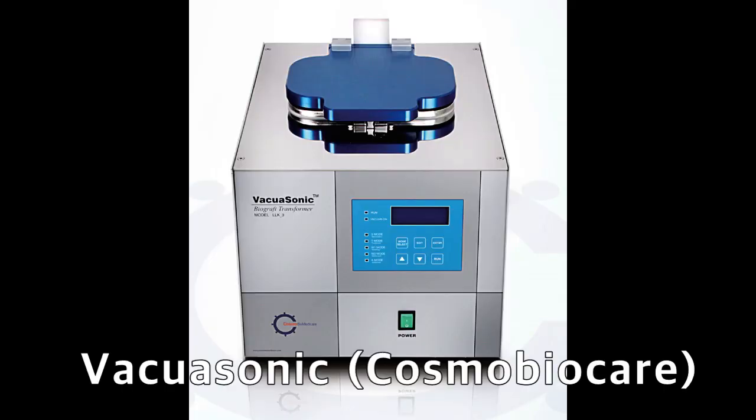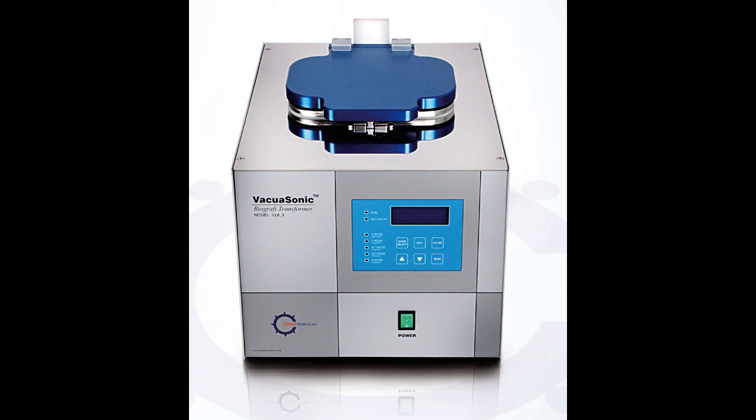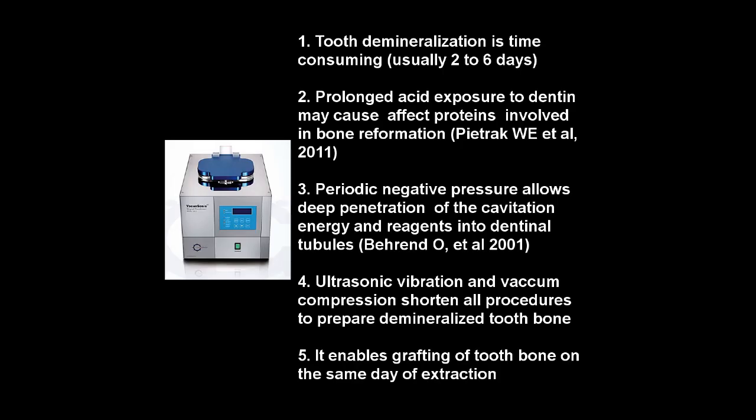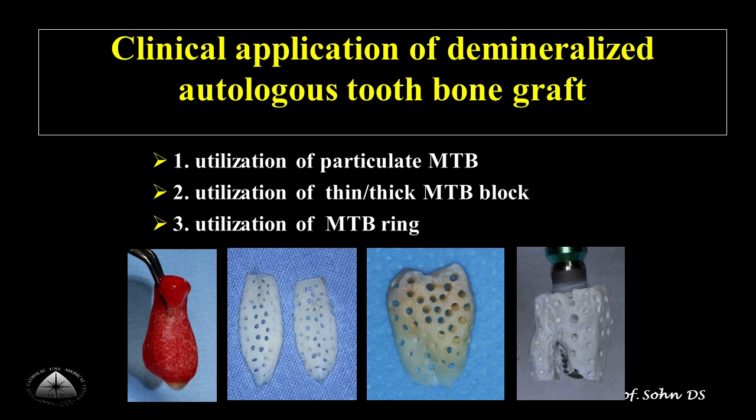This is a vacuasonic machine used to make demineralized tooth bone graft at chairside. Normally it takes a few days to demineralize at atmospheric pressure. Periodic negative pressure and ultrasonic vibration allow the penetration of cavitation energy and reagent into dentinal tubules. The vacuasonic machine utilizing ultrasonic vibration and vacuum compression accelerates the entire process to prepare demineralized tooth bone, enabling grafting of tooth bone on the same day of extraction. We can prepare four types of tooth bone graft using the vacuasonic machine.